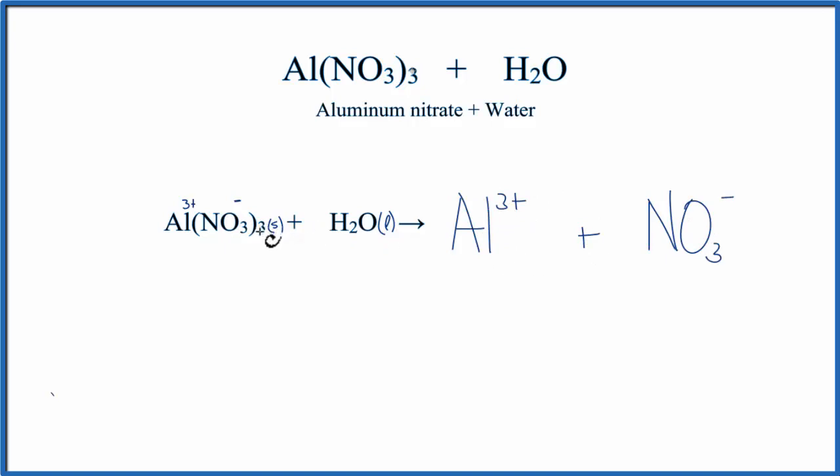But remember we have this 3 here. That means we have 3 NO3^- ions, 3 of these nitrate ions. So we'll put a coefficient of 3 in front.